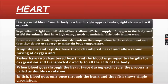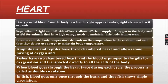When blood goes through the heart twice during each cycle, the process is called double circulation. In fish, blood goes only once through the heart, and thus fish shows single circulation.